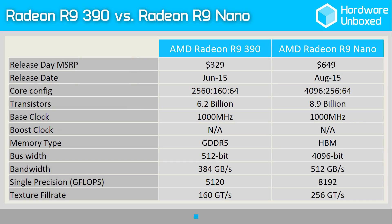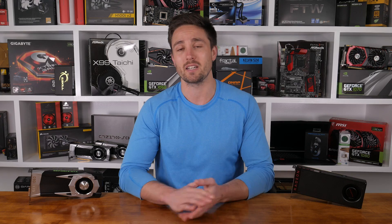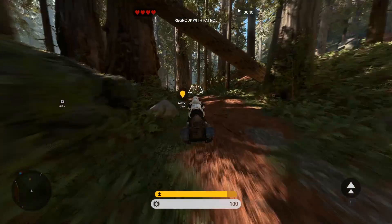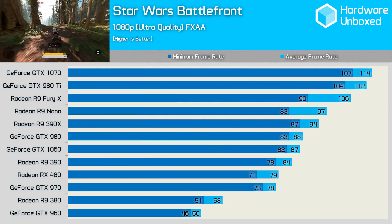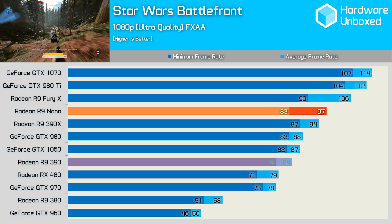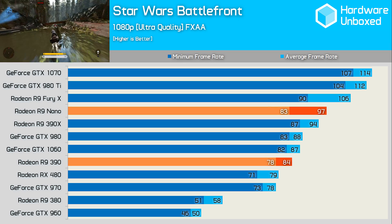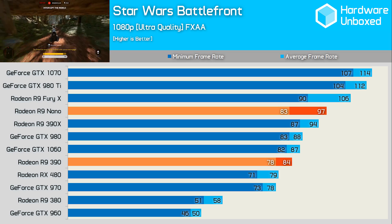The Radeon R9 390, for example, features 2560 stream processors — or cores. The R9 Nano boasts 60% more cores at 4096, operating at the same 1000MHz frequency. The Nano cores also have 33% more bandwidth to play with, so you'd expect the Nano to be around 60% faster. However, in reality, the Nano is on average just a little over 20% faster than the R9 390 in DirectX 11 titles. Looking at my Star Wars Battlefront results, for example, we see the Nano is just 15% faster than the 390 — so a 60% increase in cores netted only 15% more performance.